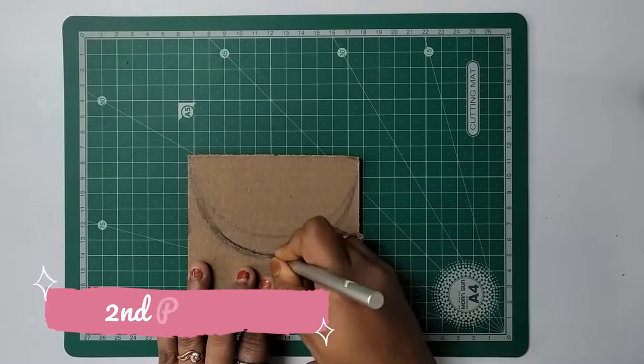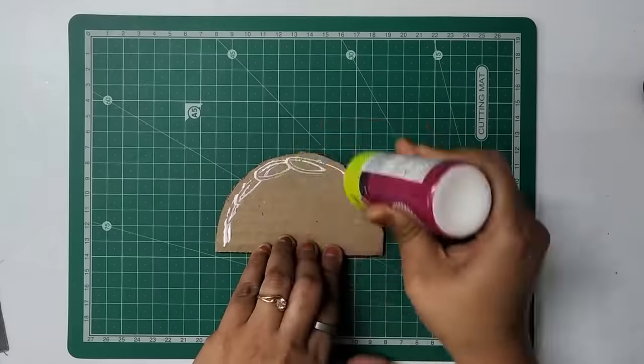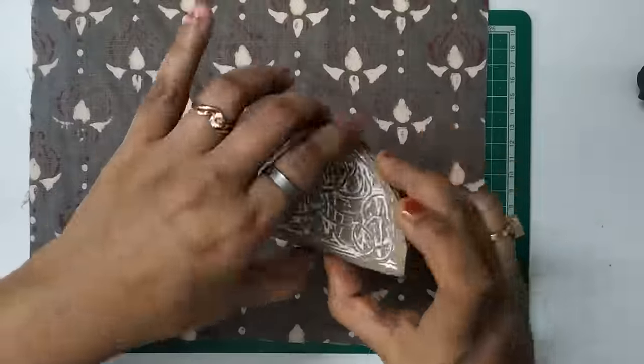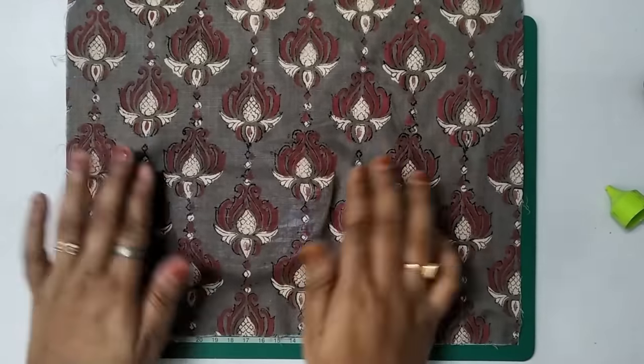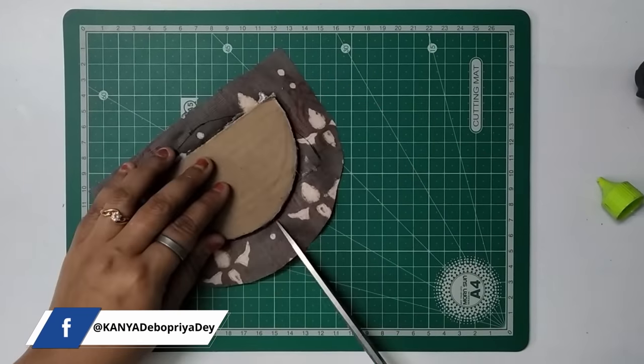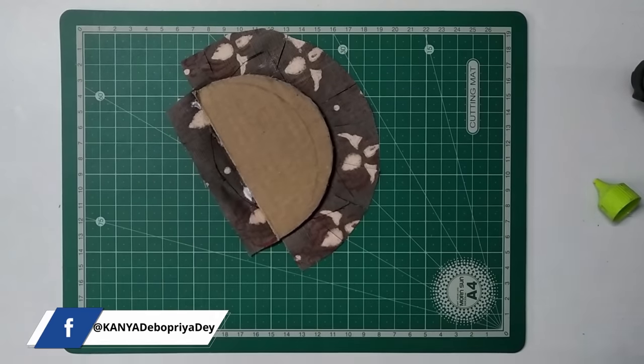Now let's start with our second project. So here I have taken one cardboard and cutting it into a half circle, applying glue on one side and placing it over a fabric that was left out from one of my kurtis, cutting extra fabric. Now cutting slits on the circular part and sticking them to the board.